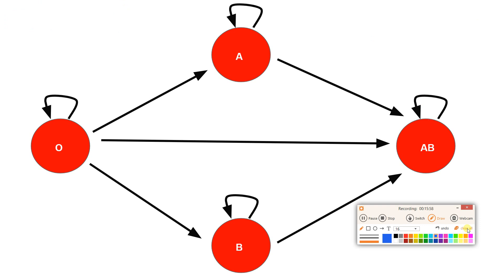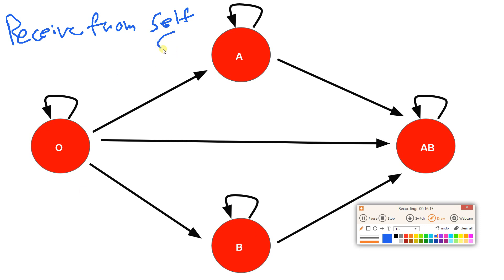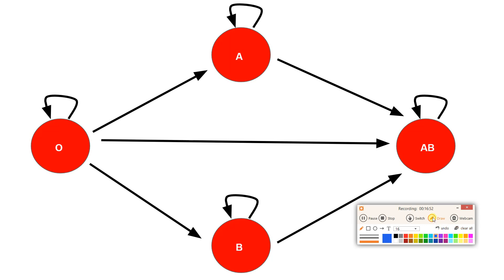So type AB has neither antibody — they're really good at getting blood. Type O has neither antigen — they're really good at donating blood. Let's keep going.